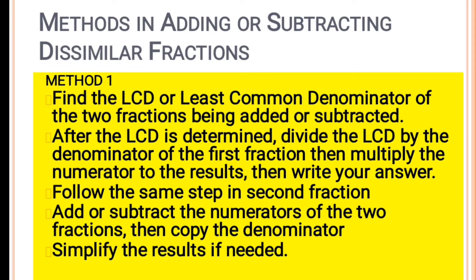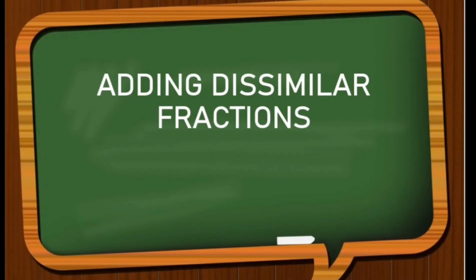Methods in adding or subtracting dissimilar fractions: First, find the LCD or least common denominator of the two fractions being added or subtracted. After the LCD is determined, divide the LCD by the denominator of the first fraction, then multiply the numerator by the result, then write your answer. Follow the same step for the second fraction. Add or subtract the numerators of the two fractions, then copy the denominator, then simplify the result if needed.